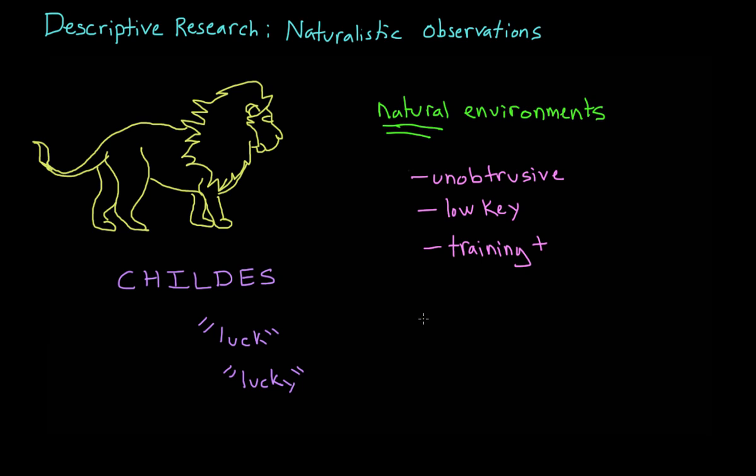So, naturalistic observations are great in that they provide us with a snapshot of everyday life. But since we're just observers, we can't really control anything. And we can't really take into account all of the different factors that might be influencing the behaviors that we're observing.